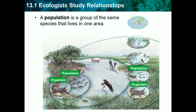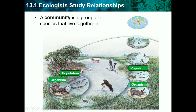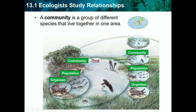A population is a group of the same species that live in one area. So the population of alligators in this ecosystem would be these four alligators right here. A community is a group of different species that live together in one area. So our community is our alligators, the birds, and the turtles.